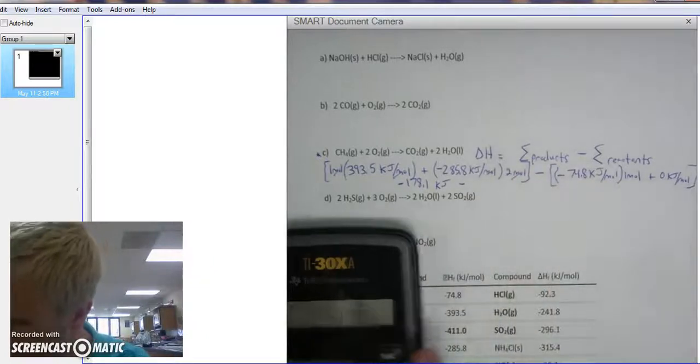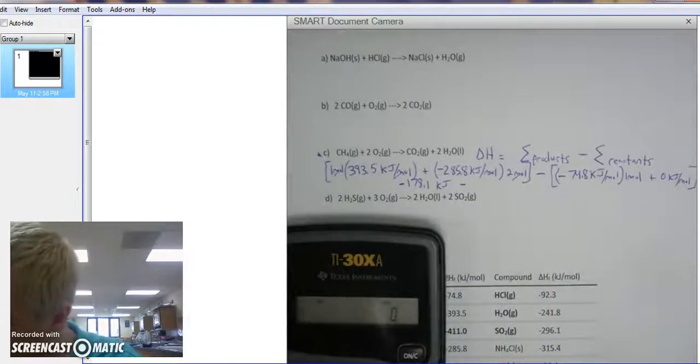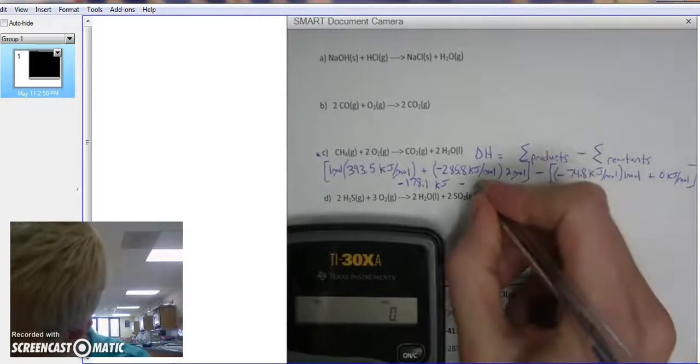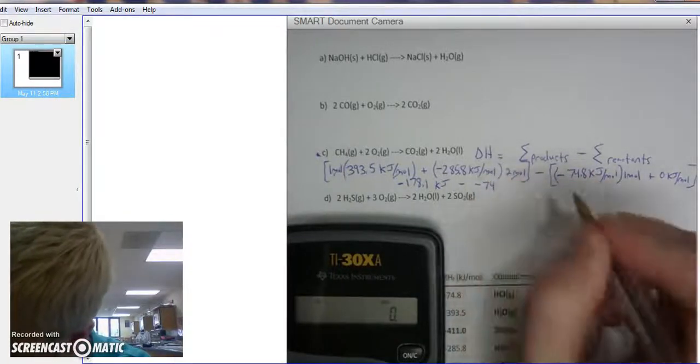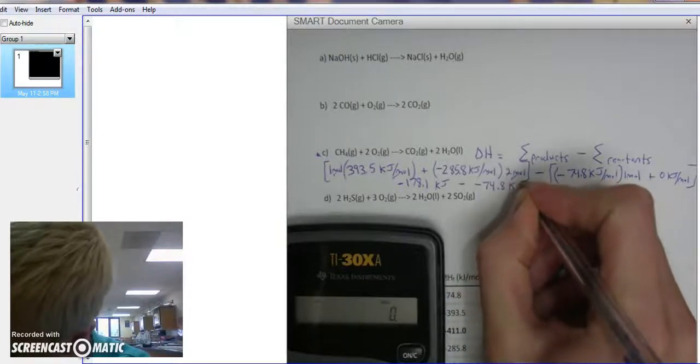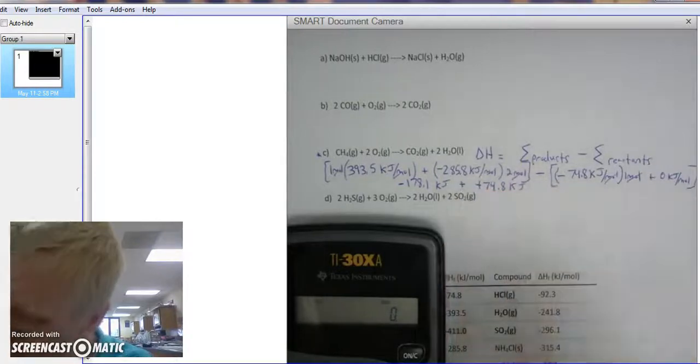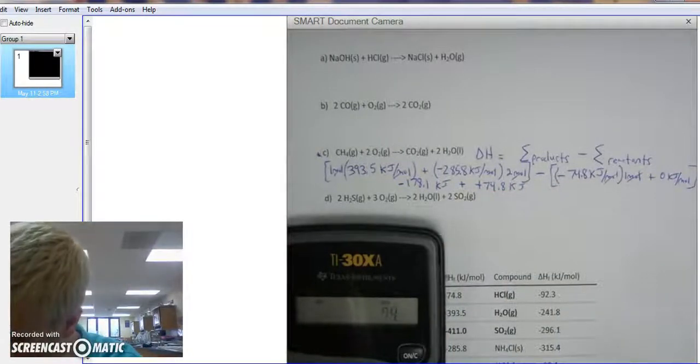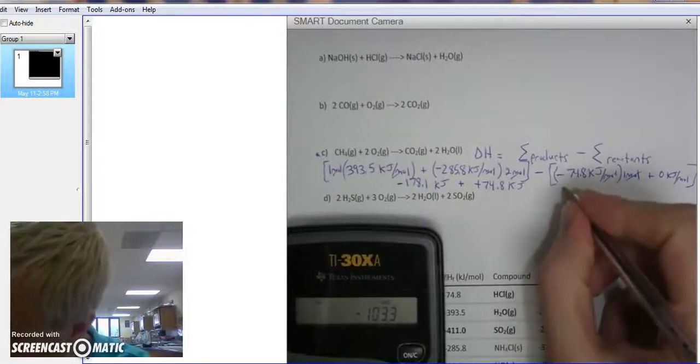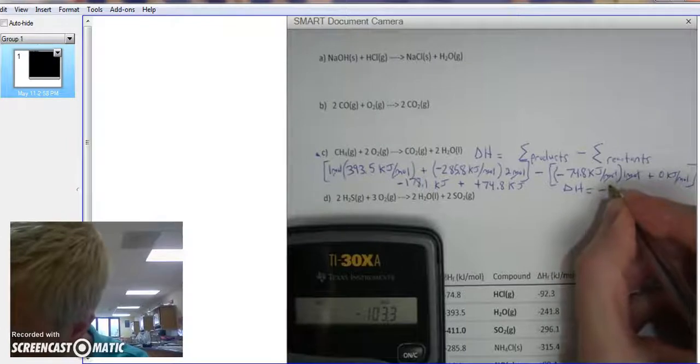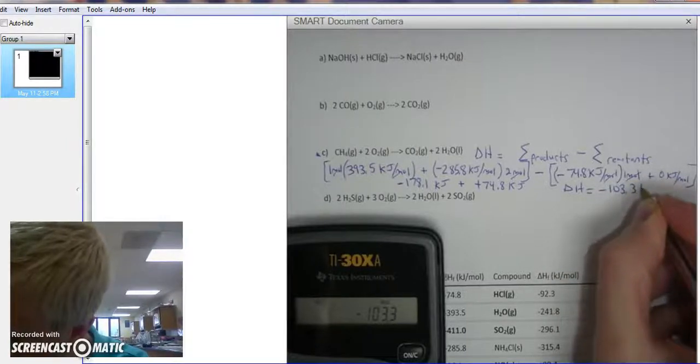Minus negative 74.8 KJ. The moles cancel out. Plus... So we're going to do negative 74.8 plus negative 178.1. And my delta H of this reaction is going to be negative 103.3 KJ.